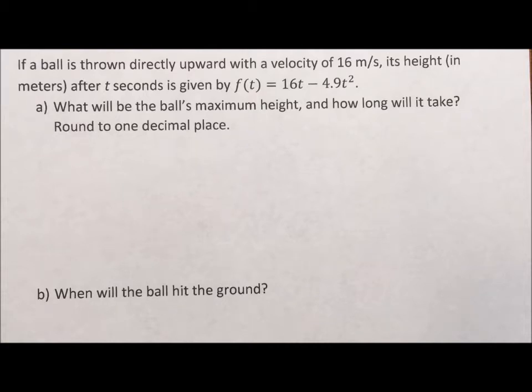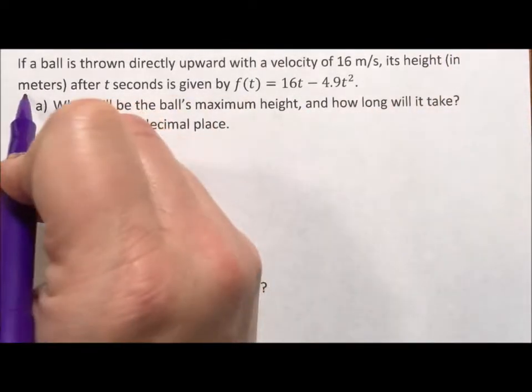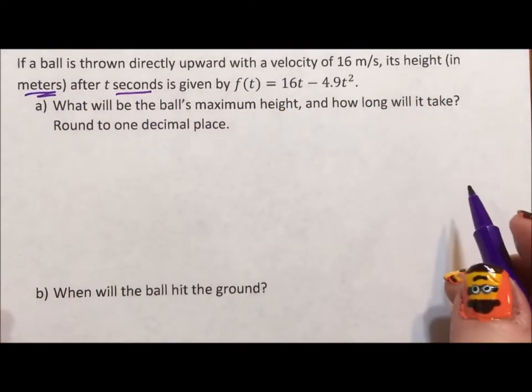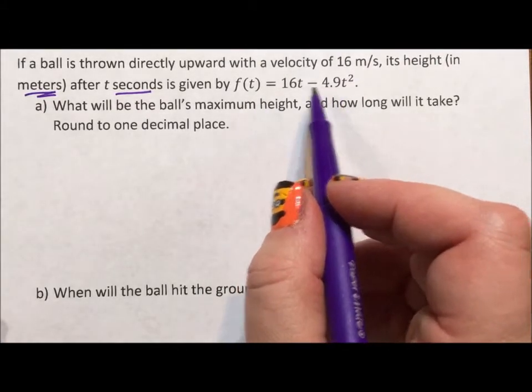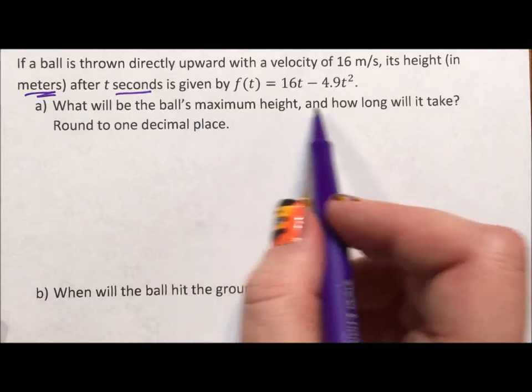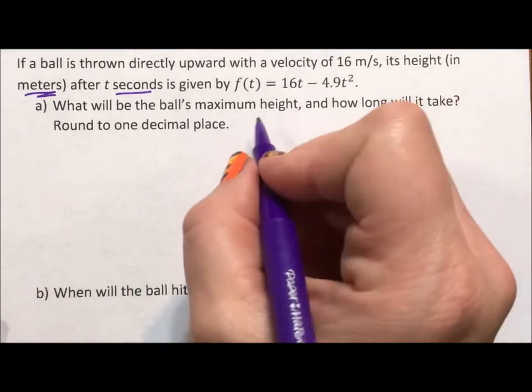This question says if a ball is thrown directly upward with a velocity of 16 meters per second, it's good to note that our height is in meters and our time is in seconds. Its height after t seconds is given by this model. What will be the ball's maximum height and how long will it take to get there? Round to one decimal place.